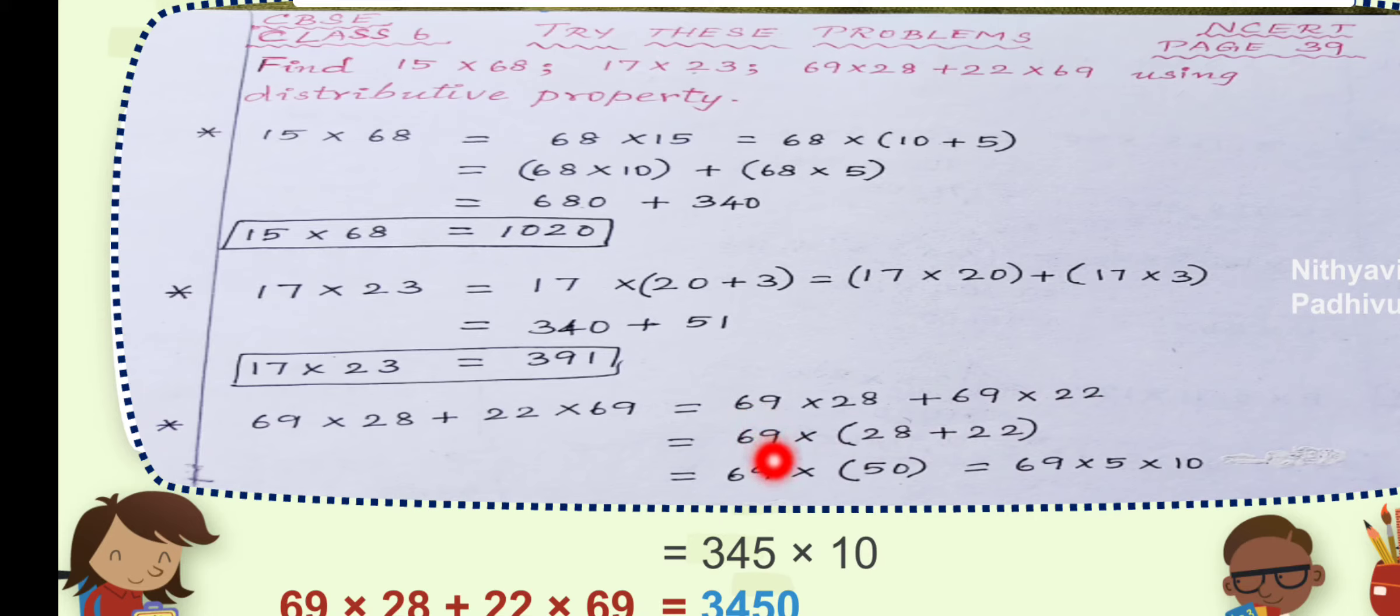Let us rewrite this expression as 69 multiplied by 28 plus 22 into 69 is rewritten as 69 multiplied by 22. In both cases, 69 is a common factor. So, take it out. Take the common factor outside, 69 multiplied by what is remaining in the first term. 28 is remaining. While taking out the common factor, you have to open a bracket here. 28 plus.